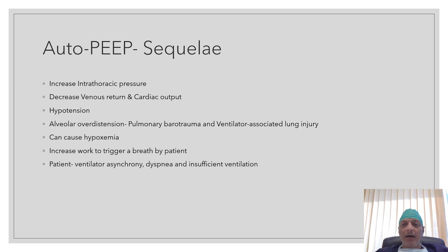Regarding sequelae of auto PEEP: it increases intrathoracic pressure, which may lead to hypotension because of decreased venous return and cardiac output. Another important complication is alveolar overdistension, which can lead to pulmonary barotrauma and ventilator-associated lung injury. Finally, auto PEEP can increase the work required to trigger a breath, because the auto PEEP must be overcome by negative pressure to initiate the next breath. If the breath is not triggered, it can lead to patient-ventilator asynchrony, dyspnea, and insufficient ventilation.